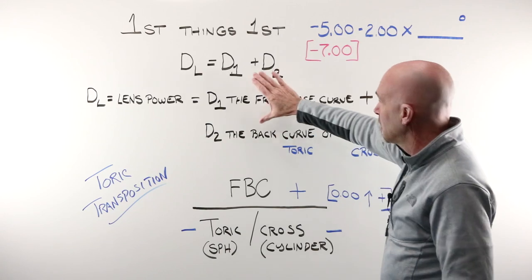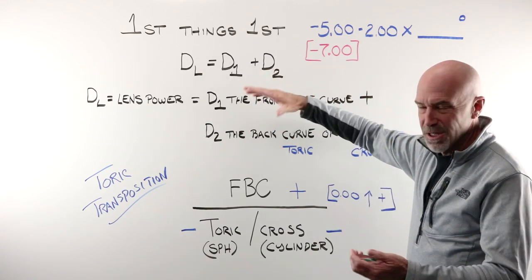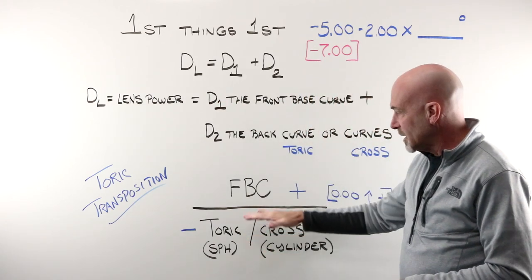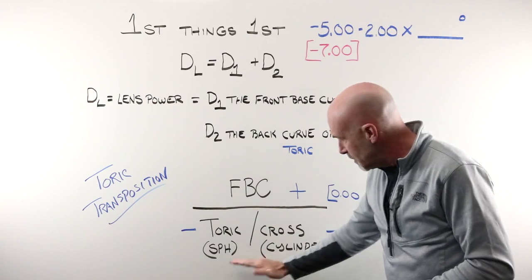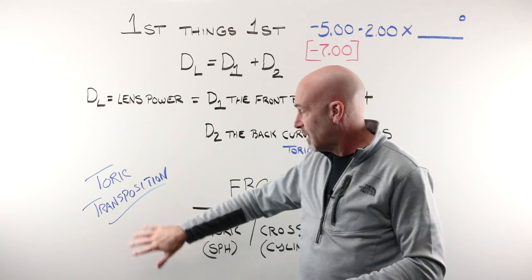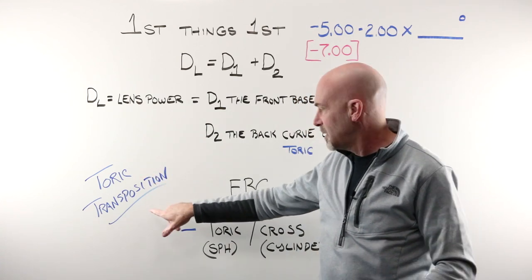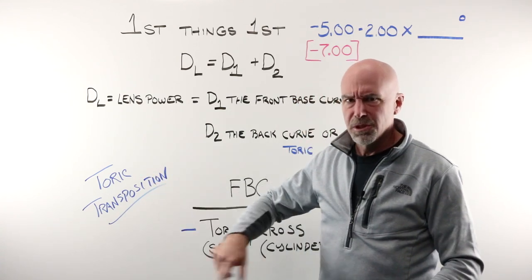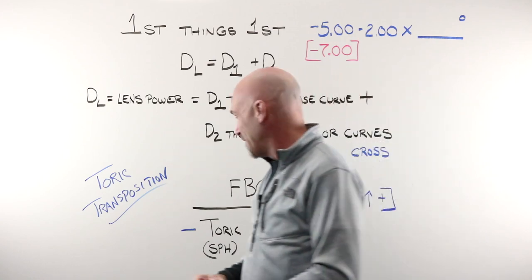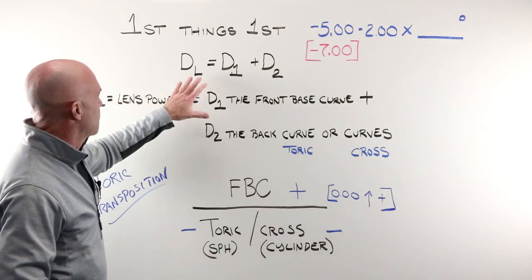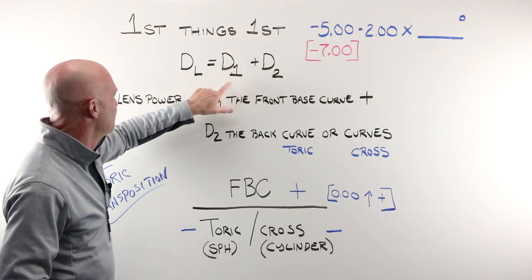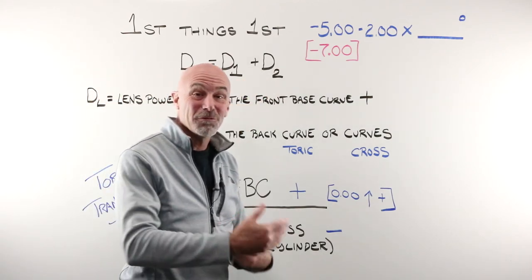Everything we're gonna be doing here is working off of the nominal lens formula. We can draw the nominal lens formula like a lens. We can make this the front, and we can make this the back. That is known as toric transposition. However, nobody really seems to know what it means anymore, so we're just gonna say we're working with the nominal lens formula.